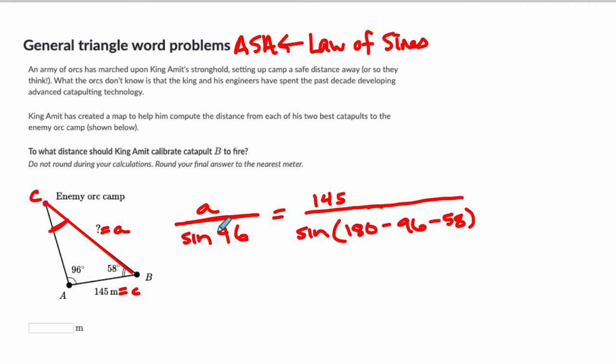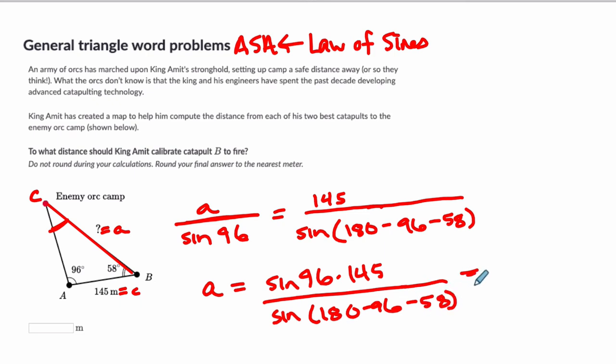So I encourage you to take a moment, solve this proportion. What you would do, solve for A, you'd have the sine of 96 times 145, divided by the sine of 180 minus 96 minus 58. And then that's going to get about 329 to the nearest meter. So 329. Alright, hope this helped.